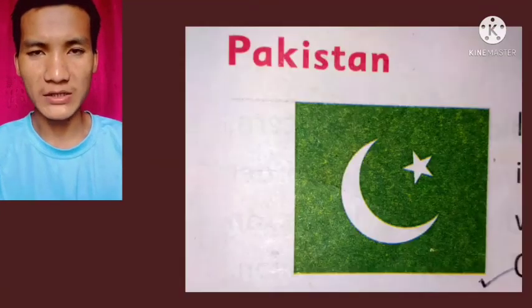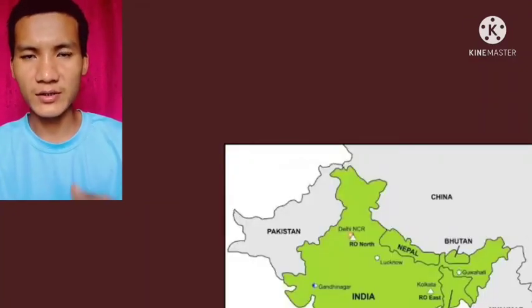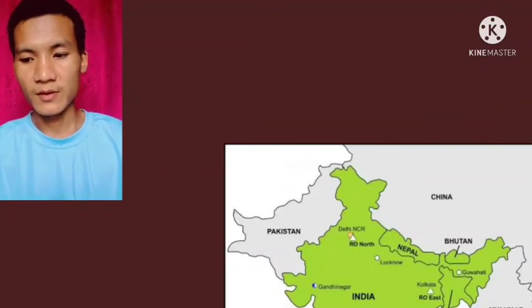Now in detail we will talk about Pakistan. In 1947, India was partitioned and the country of Pakistan came into existence. Previously, Indians and Pakistanis lived together in one country, but after 1947 they separated into two countries. Pakistan is in the northwest of India, and it shares boundaries with the Indian states of Jammu & Kashmir, Punjab, Rajasthan, and Gujarat.